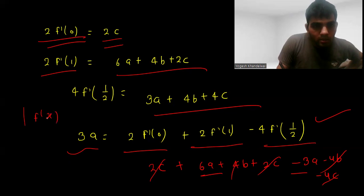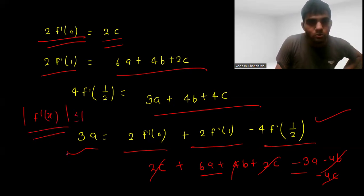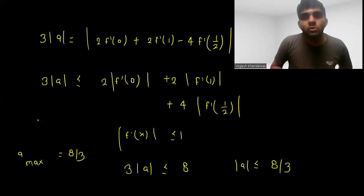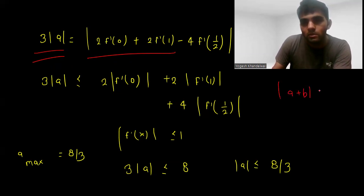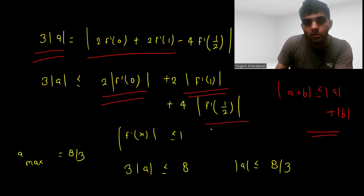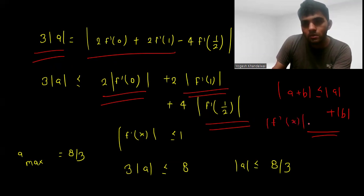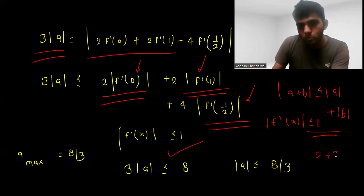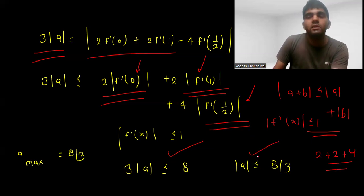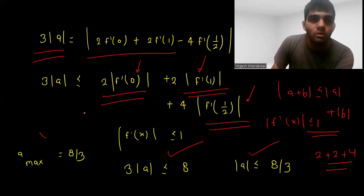We have the condition that |f'(x)| ≤ 1. Taking the modulus of both sides, 3|a| = |2·f'(0) + 2·f'(1) − 4·f'(1/2)|. Using the triangle inequality, |a + b| ≤ |a| + |b|, since |f'(x)| ≤ 1 at each point, we get 3|a| ≤ 2 + 2 + 4 = 8. So |a| ≤ 8/3, meaning the maximum value of a is 8/3.